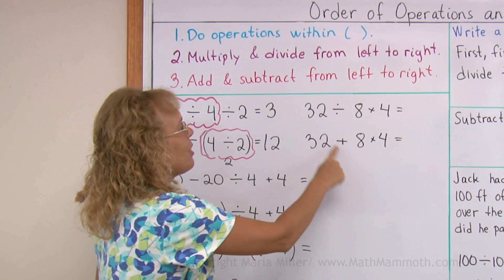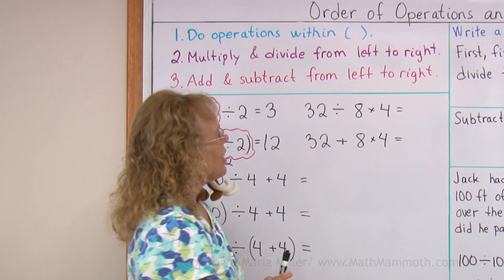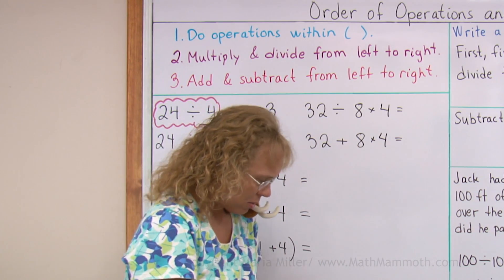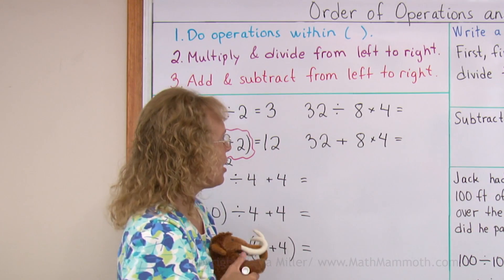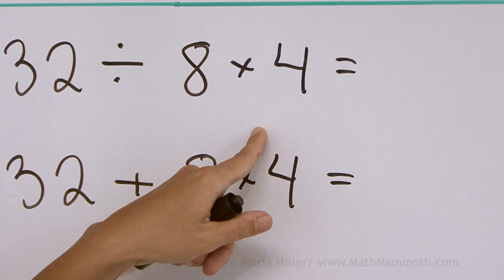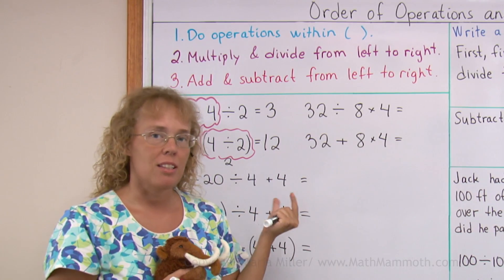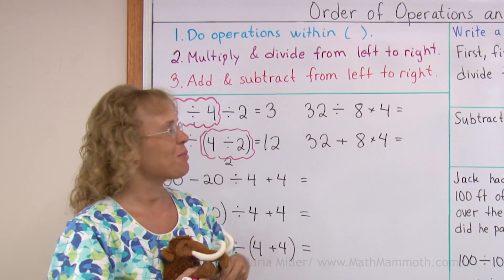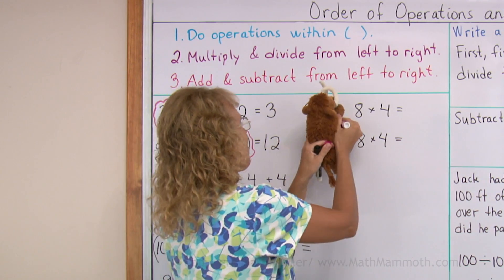The same happens here basically. There's division and multiplication. He wants to come draw bubbles. Division or multiplication first? They are the same level in the order of operations. So we go from left to right. Division first. Not the multiplication.